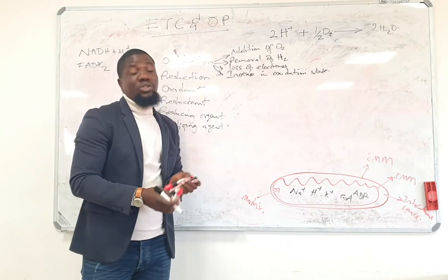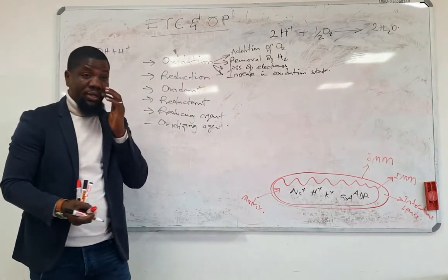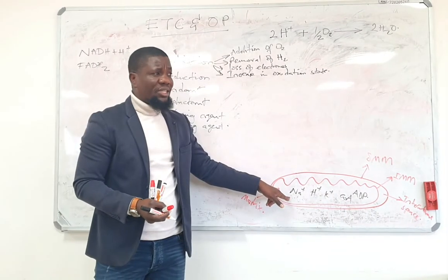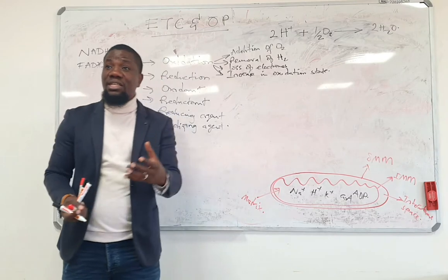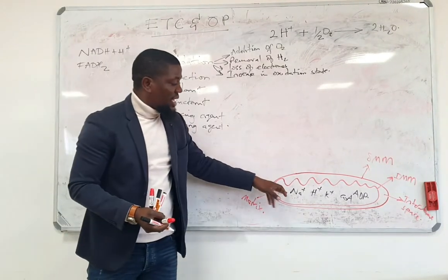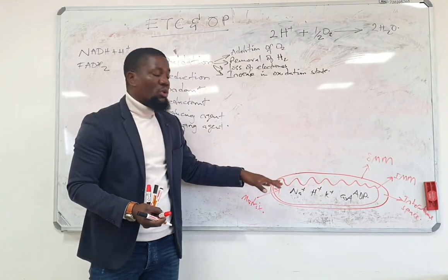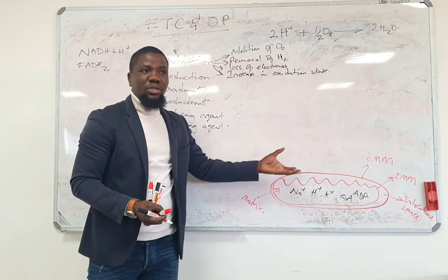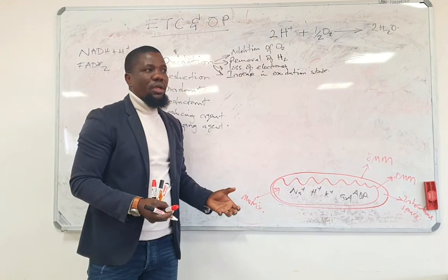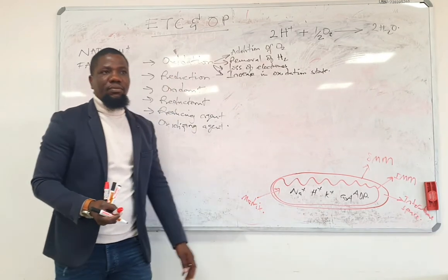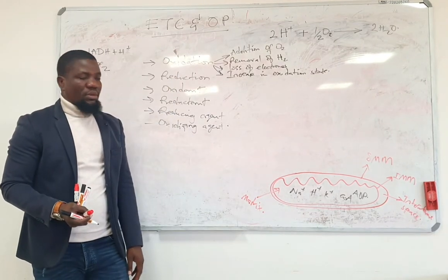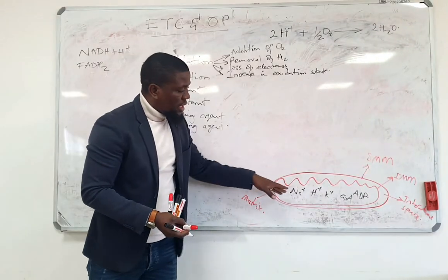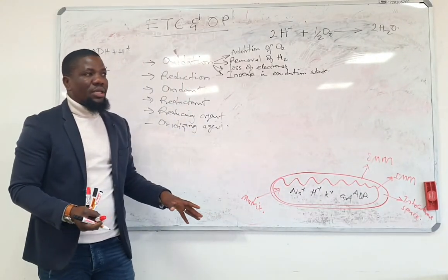The matrix contains its own DNA called the mitochondrial DNA. This DNA is particularly used for protein synthesis, and these proteins are going to be useful in the transportation of electrons in the mitochondria and in energy generation. So the mitochondrial matrix is rich in all those things.